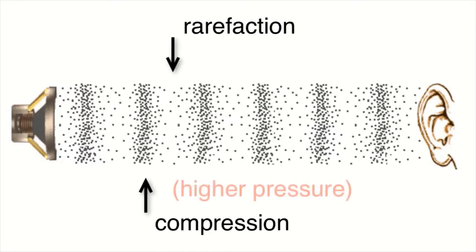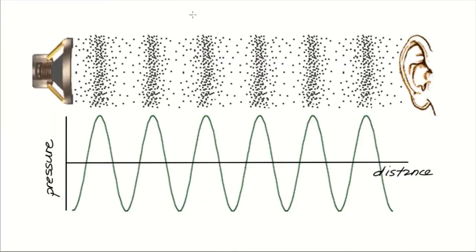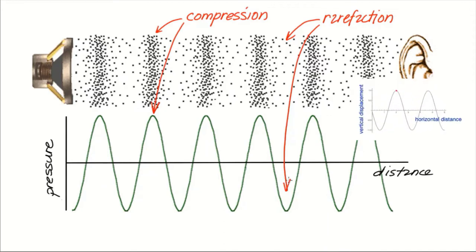At compression, the air pressure is higher than normal, and at rarefaction, the pressure is lower than normal. So here's a plot of the air pressure versus distance. We can easily recognize this as a wave. It looks like the displacement versus distance curve of a transverse wave.